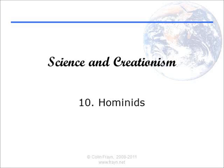Hello and welcome to the 10th in my series of presentations on the conflict between science and creationism. Today I'm going to be talking about the origin of the human species, the last few million years in which hominids have arisen on the Earth and evolved into our present form. I'm basing my talk today on the slide presentations of the infamous young Earth creationist Kent Hovind.